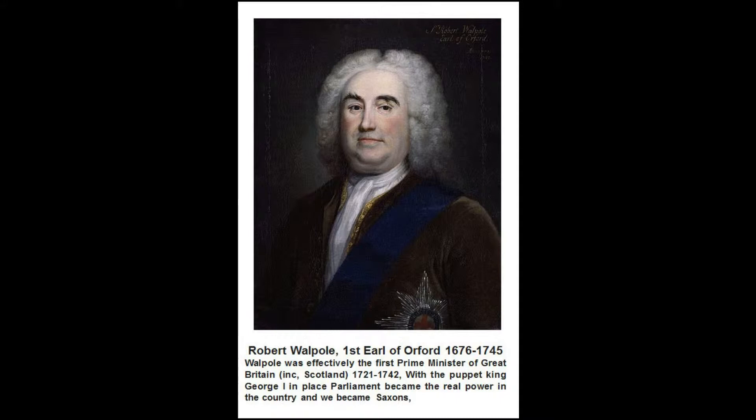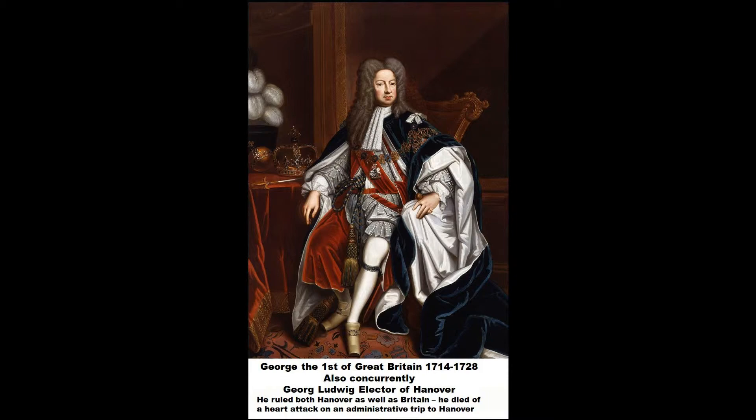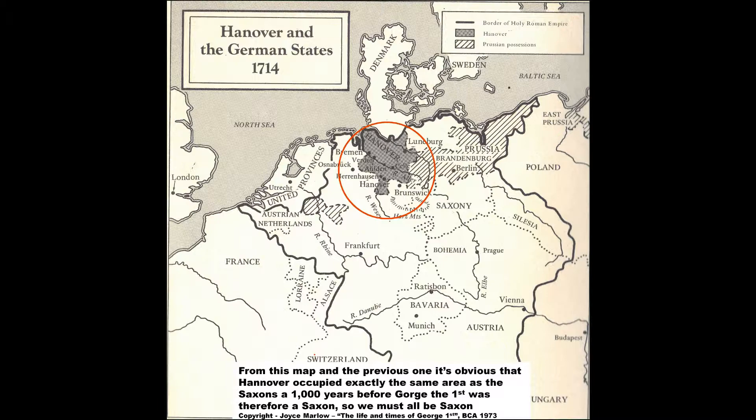Perhaps — and there is some proof of this — the history of the Dark Age period in England may have been fudged somewhat under the influence of the Westminster Parliament in the 18th century. This would have been done to justify Parliament placing on the English throne George I, the non-English speaking elector from Hanover, which of course made him a Saxon.